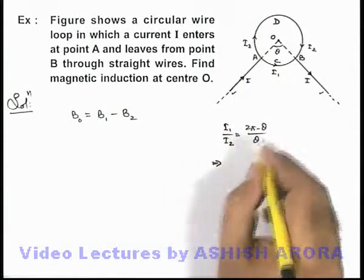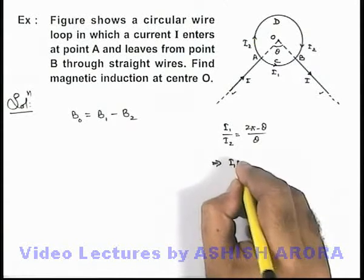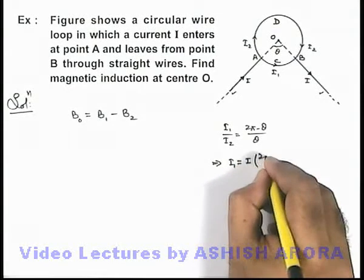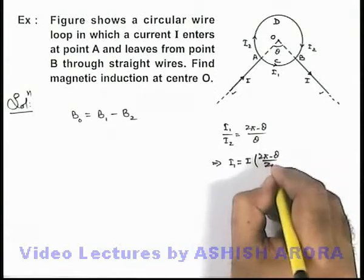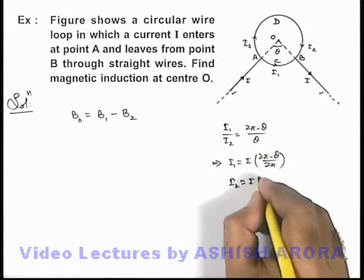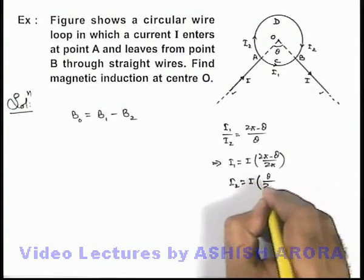This implies on simplifying we can get the value of i1 as i multiplied by 2π minus θ upon 2π. And i2 is equal to i multiplied by θ upon 2π.